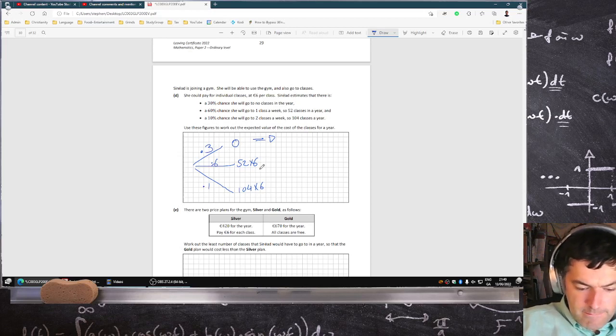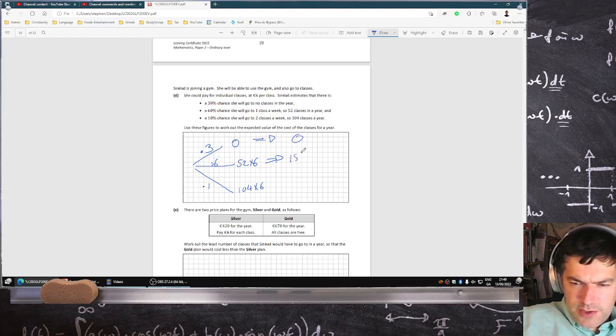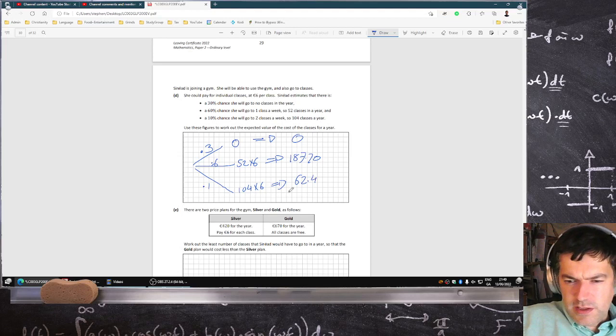So this one, that's zero. That's €187.20. And then 0.1 times 104 times €6, that's €62.40. And then you add those three up, so that's €249.60. That's the expected cost for her.